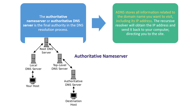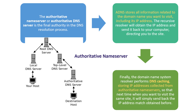The authoritative name server is the final authority in the DNS resolution process. It stores all information related to the domain name you want to visit, including its IP address. The recursive resolver obtains the IP address from the authoritative name server and sends it back to your computer, directing you to the site. Finally, the DNS resolver performs DNS caching — storing the IP address obtained from the authoritative name server — so that next time you visit the same site, it simply returns the cached IP address.